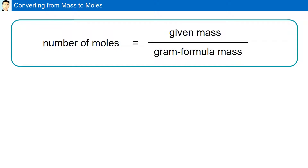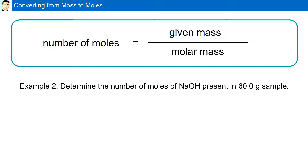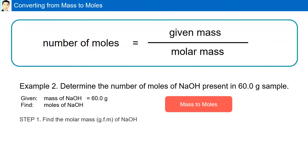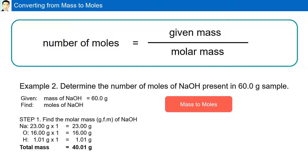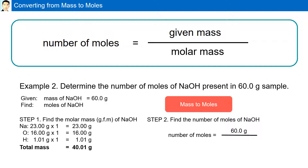Converting from mass to moles. Earlier we were given moles to find mass, but now we are going from mass to find the number of moles. For example, determine the number of moles of NaOH present in a 60.0 gram sample. The first step is to find the molar mass of NaOH, which is 40.01 grams per mole. Dividing 60 grams by 40.01 grams per mole gives 1.5 moles of NaOH.